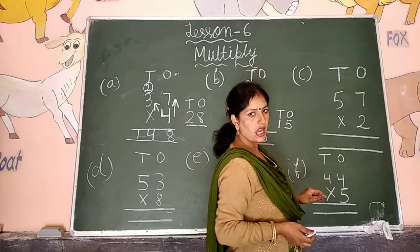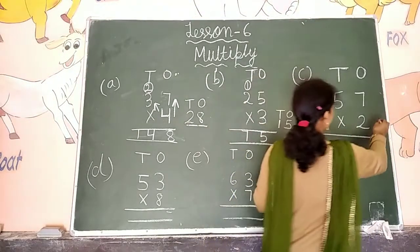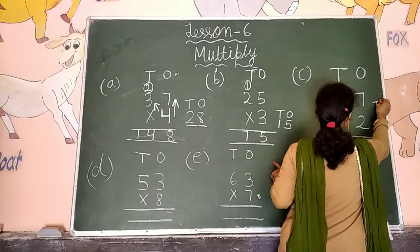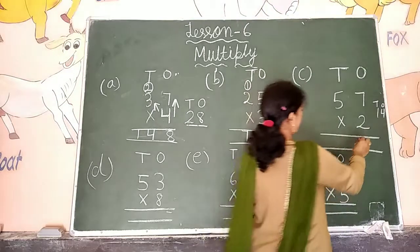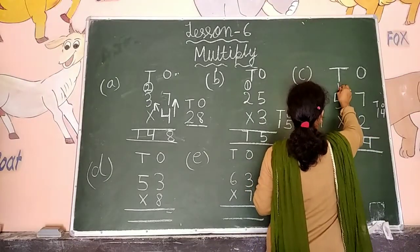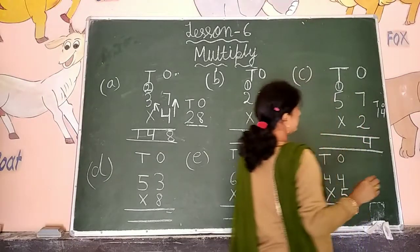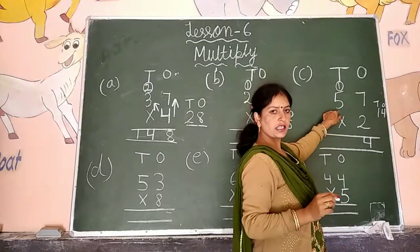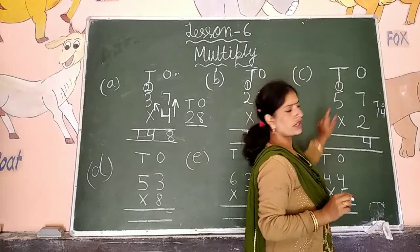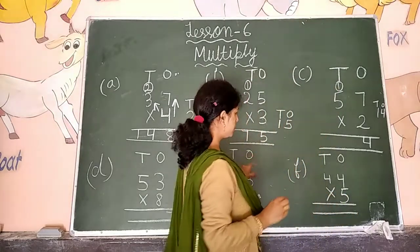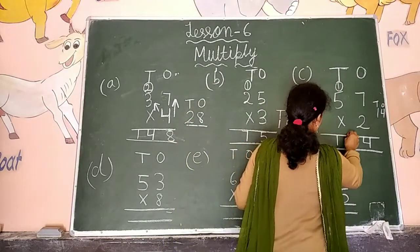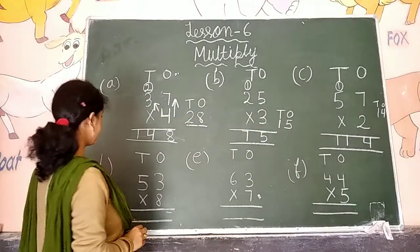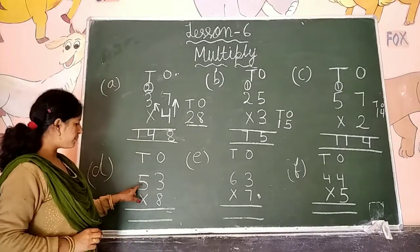Next is 57 multiplied by 2. Two sevens are fourteen — fourteen. The ones position digit we write below, and the ten we carry over. Two fives are ten, plus one carry over — eleven. So the answer is one hundred fourteen.